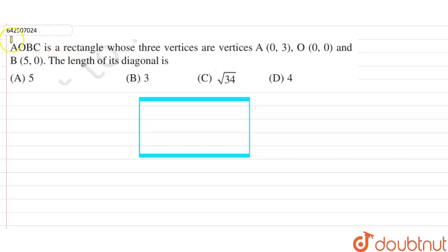Hi students, our question is AOBC is a rectangle whose three vertices are A(0,3), O(0,0), and B(5,0). The length of its diagonal is?